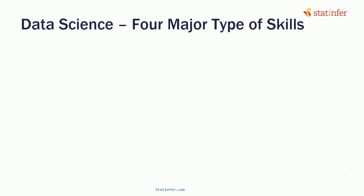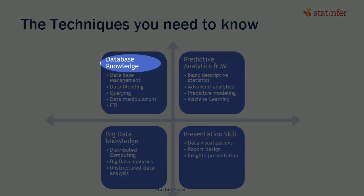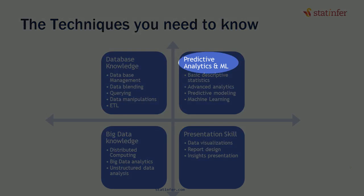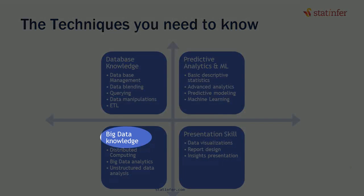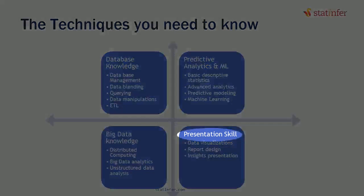There are four major skills required for a data scientist, categorized into four quadrants: database knowledge in quadrant one, data analytics and machine learning in quadrant two, big data and distributed computing in quadrant three, and in the final quadrant, presentation or visualization of final reporting.